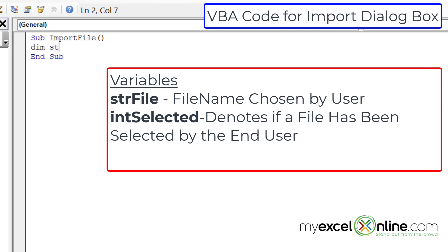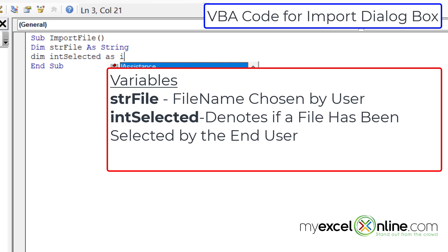I'm going to type dim strFile as string. I also need a variable to keep track of whether or not the end user had picked a file when the file dialog box was shown. So I'm going to type dim intSelected as integer. That will be the variable we use to show whether or not the end user has picked a file. So those are our variables for this subroutine.